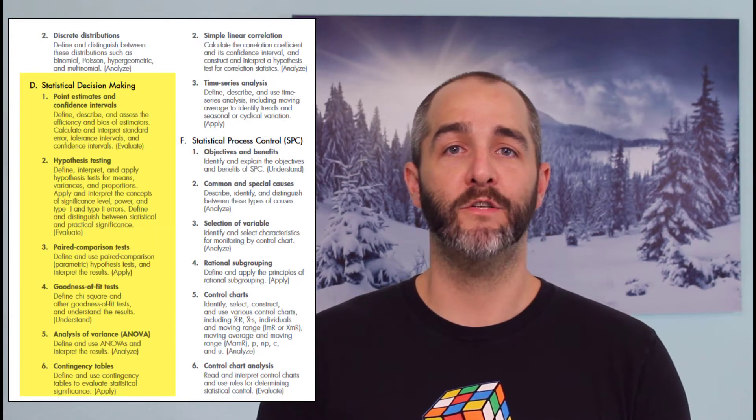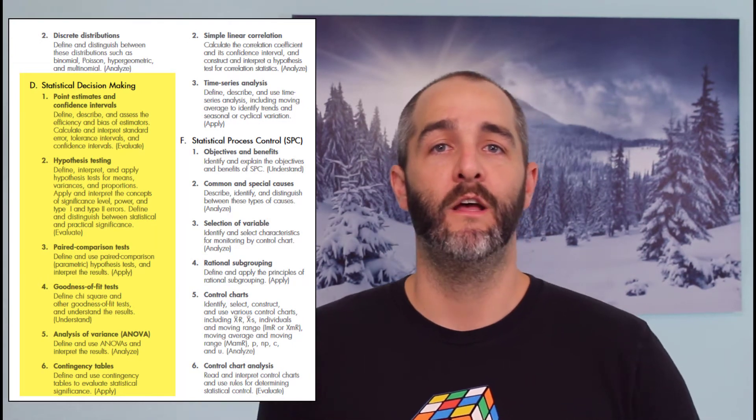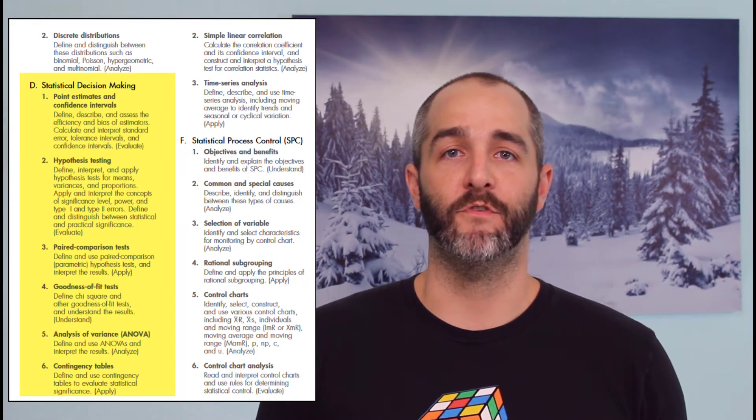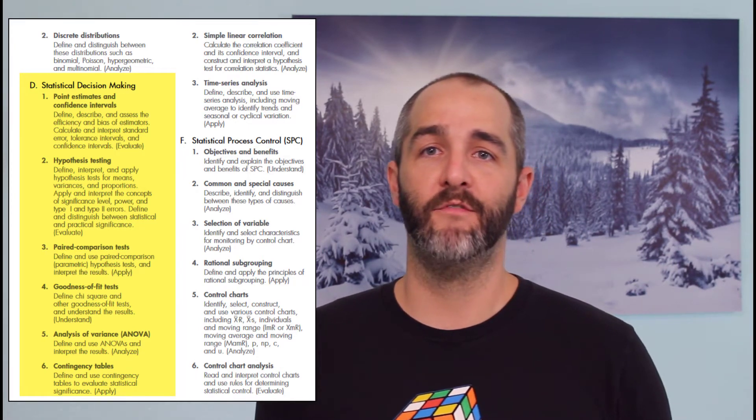For example, statistical decision making has a bunch of subtopics within it: point estimates, confidence intervals, hypothesis testing, paired comparison testing, contingency tables, ANOVA analysis, goodness of fit testing — there's all sorts of material crammed into statistical decision making. If we use the 80-20 rule, we can determine the most critical topic within statistical decision making, and that ends up being two topics: hypothesis testing and confidence intervals.